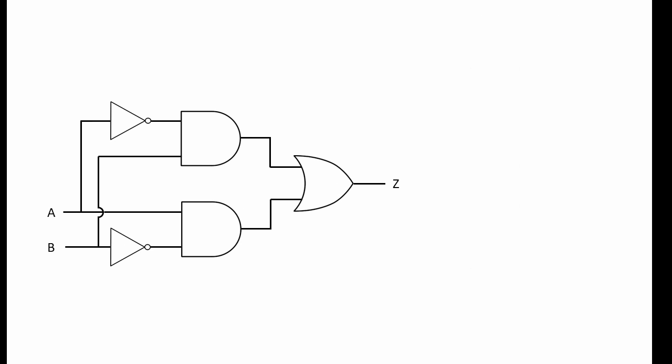This final example looks a little bit more complicated than anything you have seen before, but there is nothing new here. Work through it systematically and you will come up with a result. Before tackling this one, notice that input A has been split — it's feeding the top NOT gate and the bottom AND gate. Notice also that input B has been split — B is feeding the bottom NOT gate and the top AND gate. To produce a truth table, we should consider intermediate points C, D, E and F. So we are going to need a truth table with four rows and seven columns.